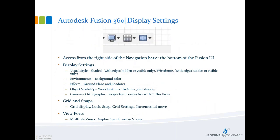We'll also take a quick look at the display settings, and this is where we're going to see some things happen regarding our remote desktop settings relative to our ground planes and shadows and whatnot. This is one of the things that I discovered as I was working through this. We'll look at the different shaded views, the different visual styles — shaded wireframe, with edges, without edges. We can look at background color — it's that stark white background color, so we can look at how to change that. As well as our object visibility, things like work features and sketches, and then some camera settings, grid and snap settings, and some options for our multiple viewports.